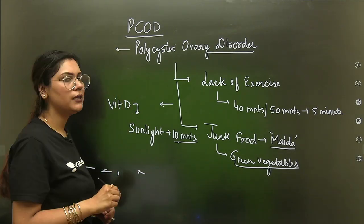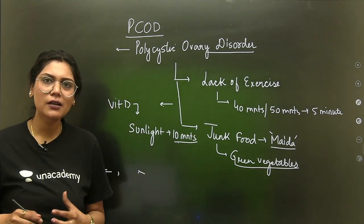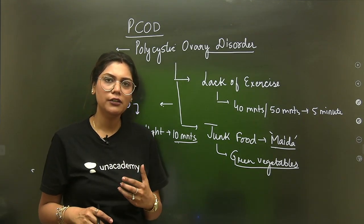If you look at polycystic problem, what is happening in this problem? You know that every month the female has ovulation in the 14th day of the cycle.